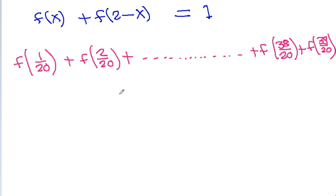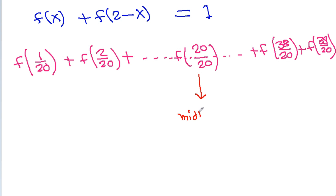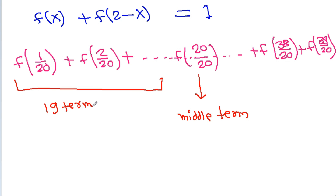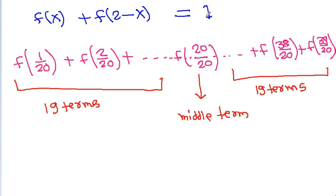The total number of terms is 39, so the median term will be f(20/20). Since f(x) + f(2 - x) = 1, we can pair terms: f(1/20) + f(39/20) = 1, and so on. There will be 19 such pairs each summing to 1.